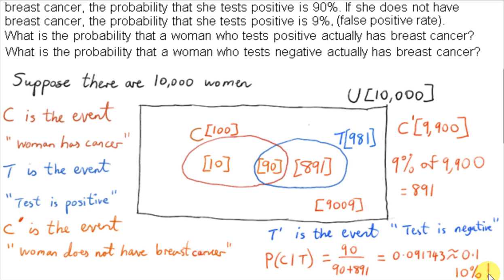This is somewhat surprising. A woman told that she has tested positive may think she almost certainly has breast cancer. But it turns out that if she tests positive, there's only a 10% chance that she has breast cancer — not something like 95%, only 10%. So follow-up tests would normally be recommended.